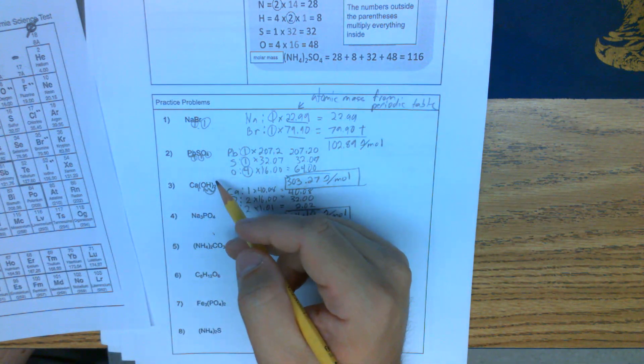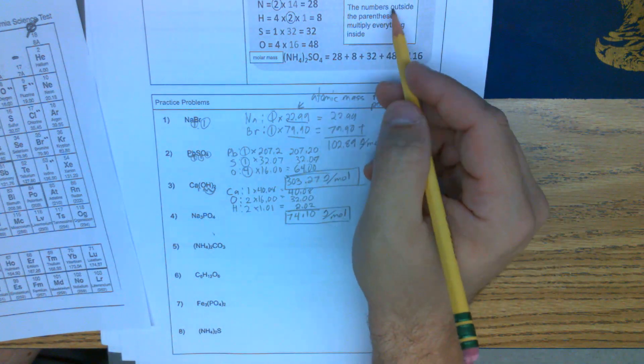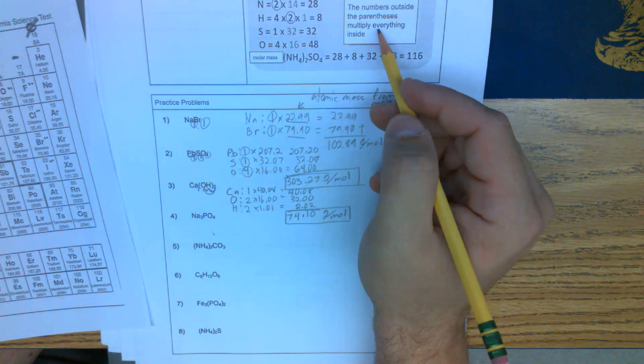So with the parentheses, multiply everything inside. Numbers outside the parentheses multiply everything inside.